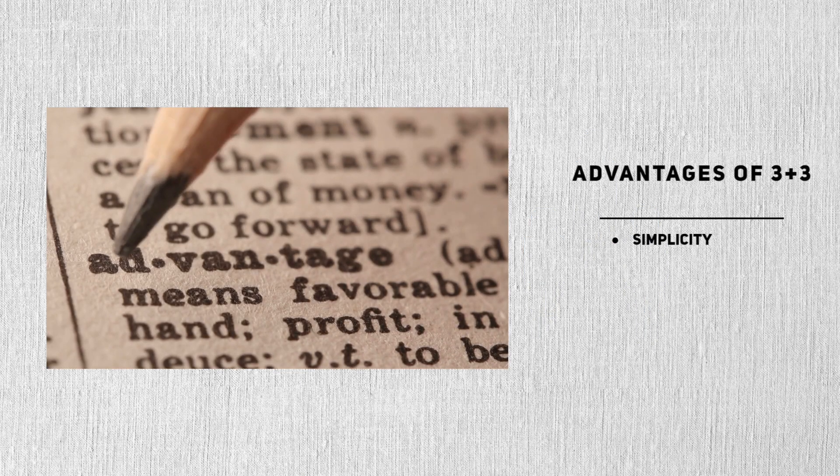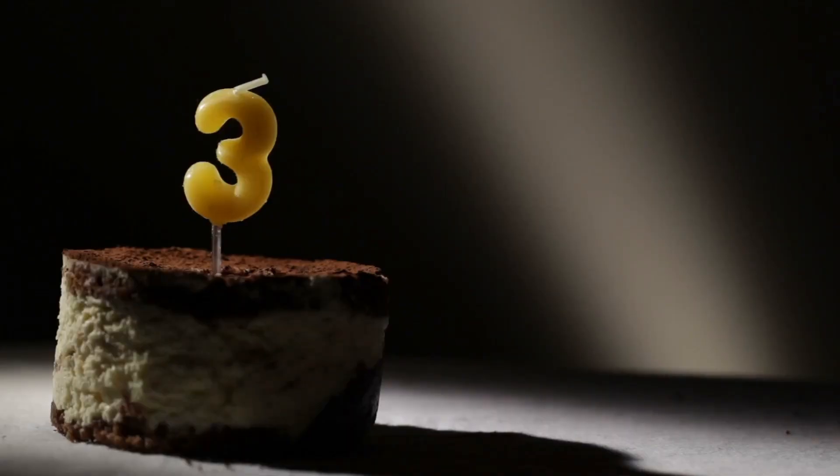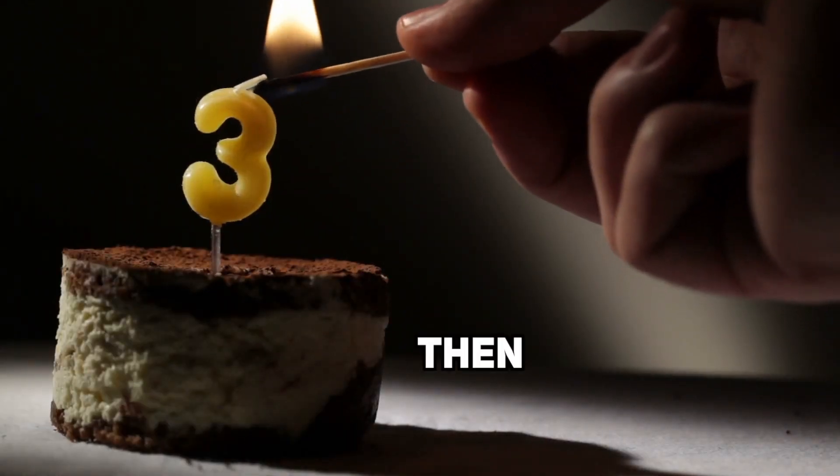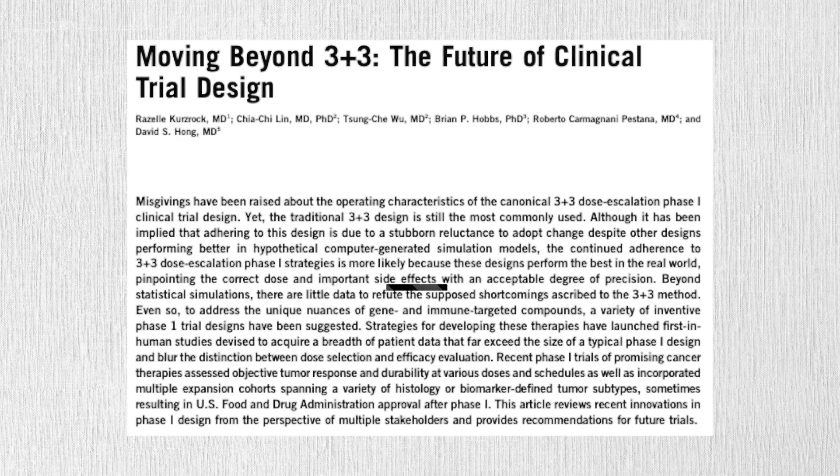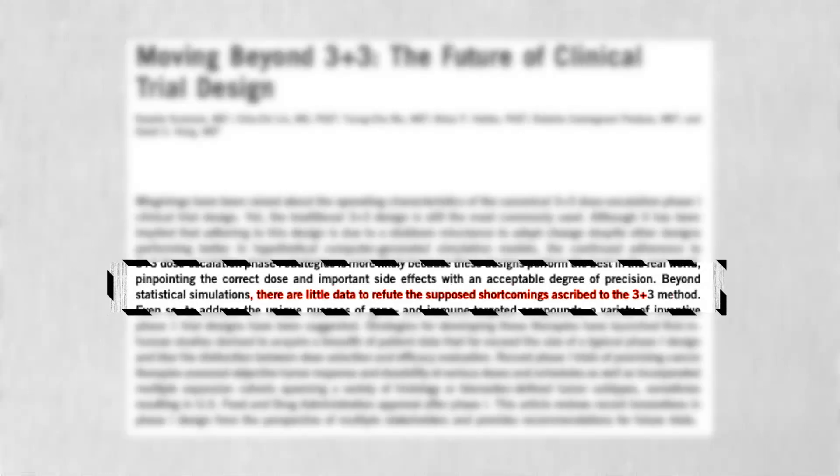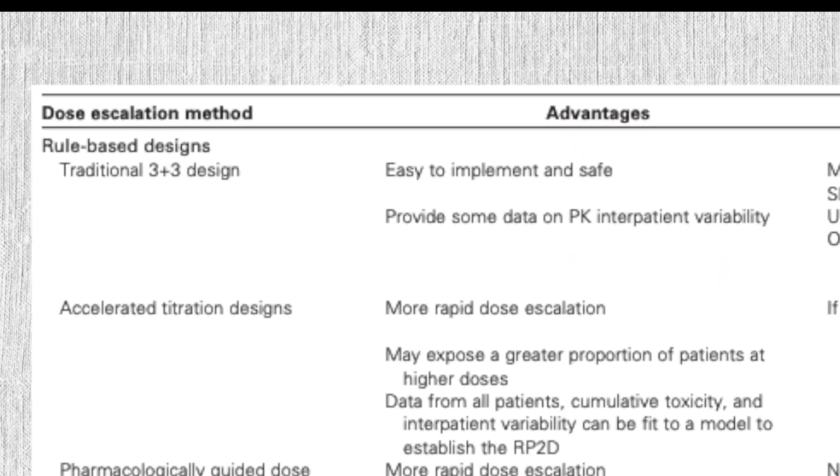Its main advantage is its simplicity. And it's important because it's the only advantage that it's got. If 3 seems like a small number to you, then you're right. 3 is chosen largely because it's convenient. It's been well documented that 3 plus 3 trials are inefficient at actually finding a good MTD. The only reason that people use it is because it's simple and it doesn't require a statistical background.